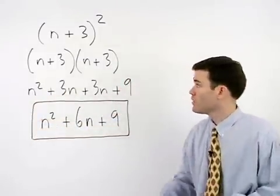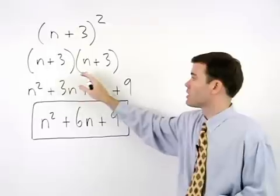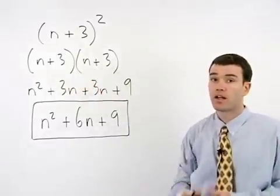Remember, whenever you square a binomial, you must write it out as that binomial times itself, then FOIL.